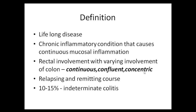Three important words must be remembered regarding ulcerative colitis: it is a continuous, confluent, and concentric involvement of the large bowel. Continuous means there are no skip lesions — it involves continuously from the rectum proceeding proximally to sigmoid, descending, transverse, ascending, and cecum. Confluent and concentric means complete circumferential involvement. It typically has a relapsing and remitting course.